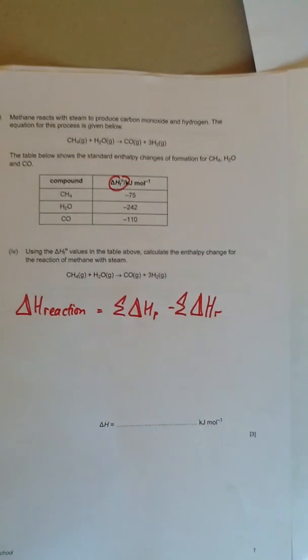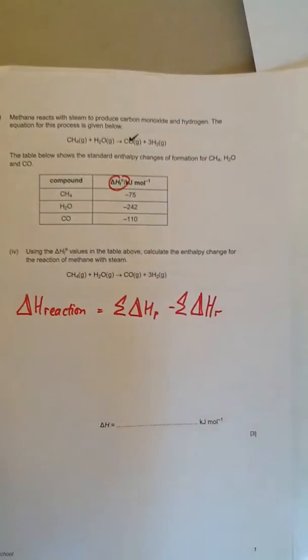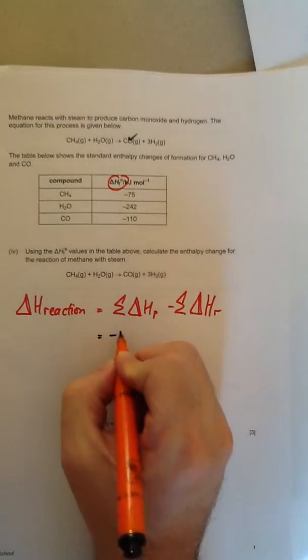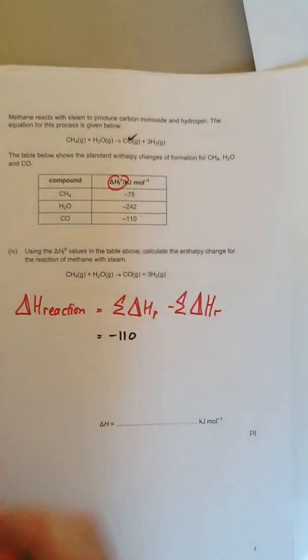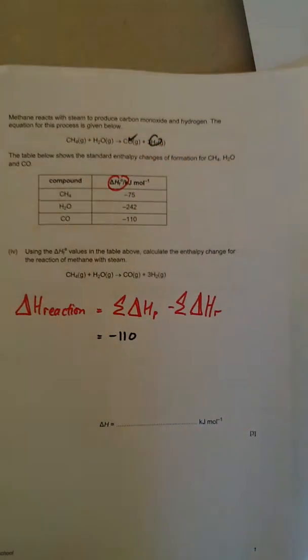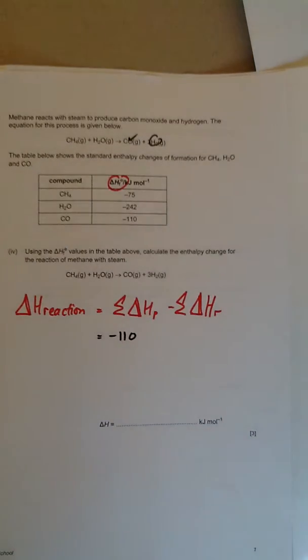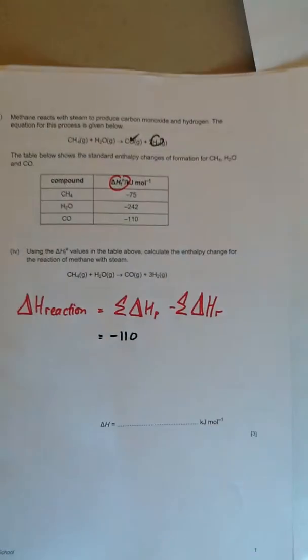So what does that mean? We're just going to use the numbers in the table. The products are carbon monoxide minus 110. H2 doesn't have delta H naught F. The standard enthalpy of formation of any element is zero. We'll try and keep the colors the same. So we then need to say what are the reactants?